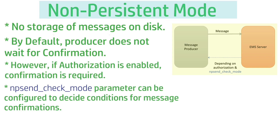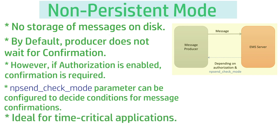There is also a configuration parameter called `np_send_check_mode` that can be set to decide the conditions under which message confirmation is sent. So there are two ways to control whether the server sends acknowledgements in non-persistent mode: enabling authorization, or configuring the `np_send_check_mode` parameter. Based on that parameter's value, the server decides whether to send an acknowledgement back to the producer.